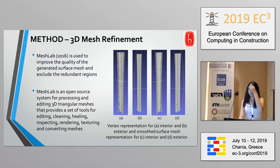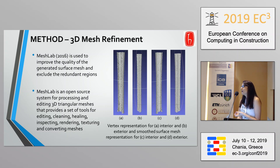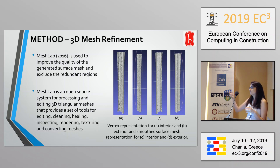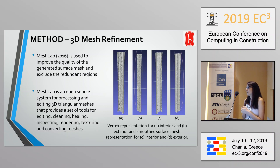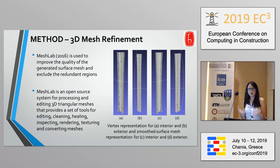We performed mesh refinement because the initial 3D point cloud was a little coarse, especially for small dimensions like the lip of the C section, which is only 4 or 5 millimeters. Those parts were quite noisy, but after smoothing the 3D point cloud we were able to get good results.